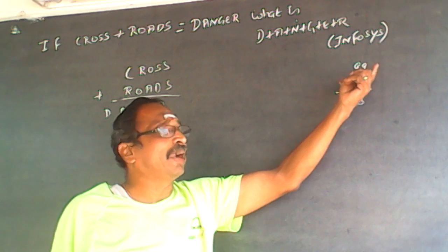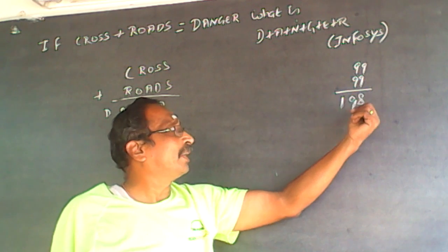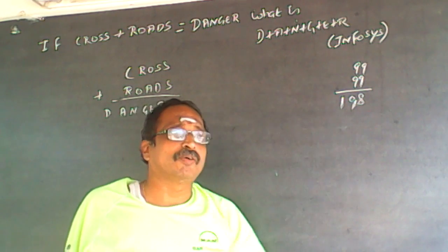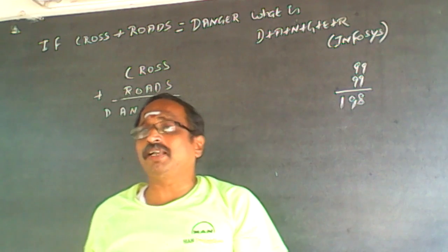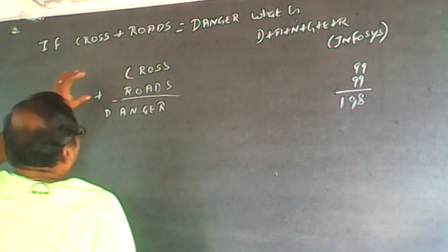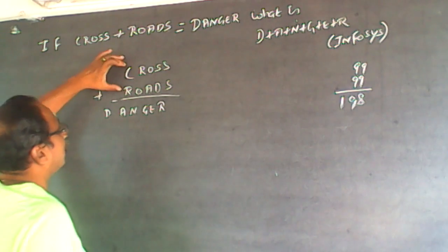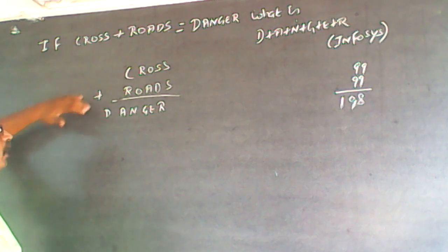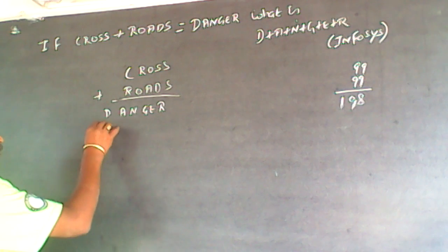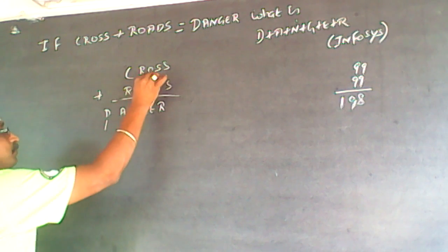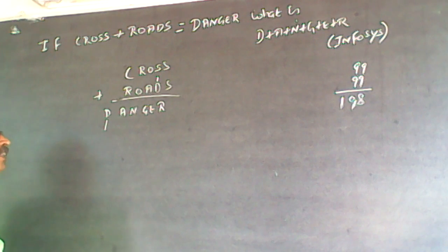The largest numbers I am adding give a maximum carry of only one. So what this implies is: here I am only adding two numbers, the maximum carry can only be one. So wherever I have D, it will be one. D is one.